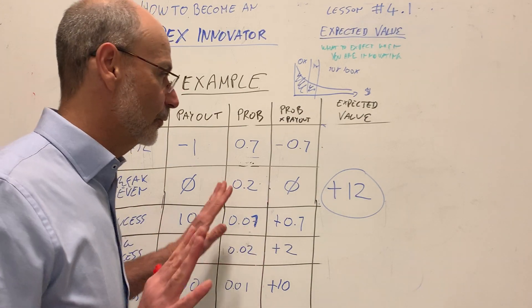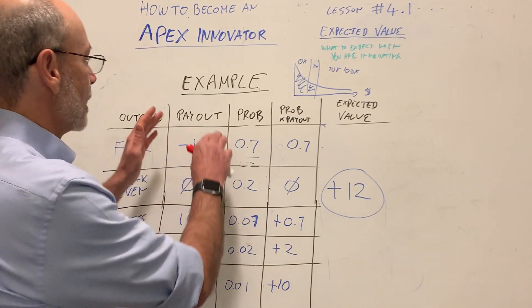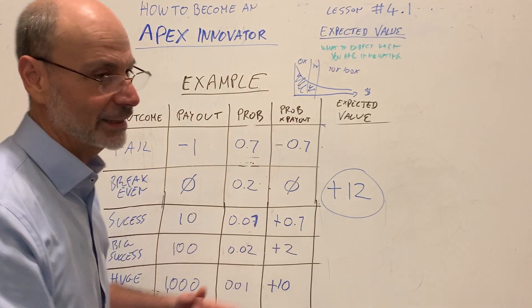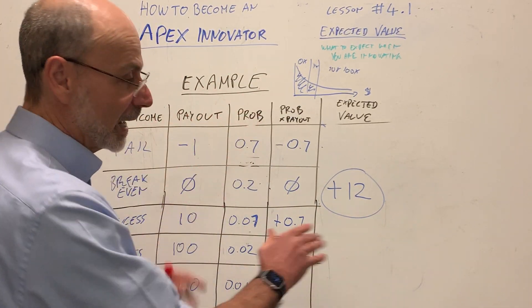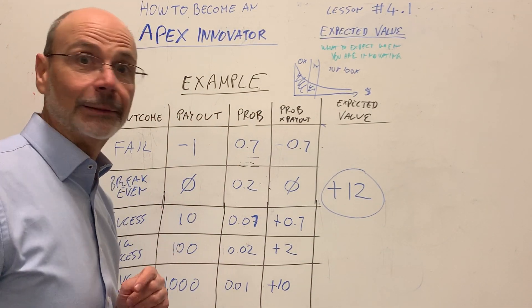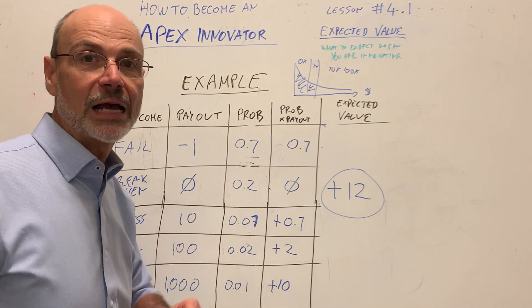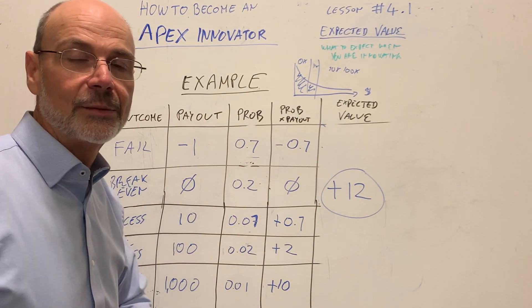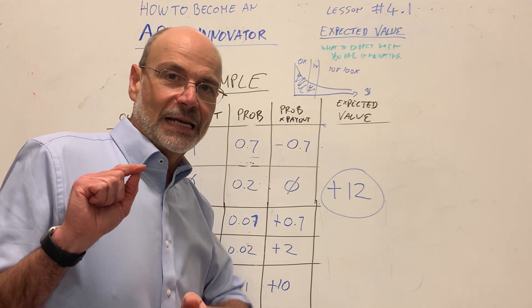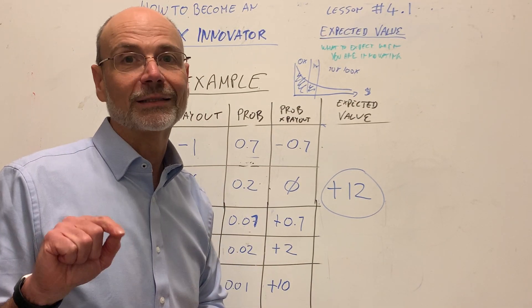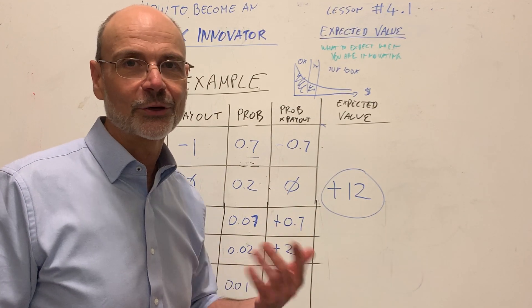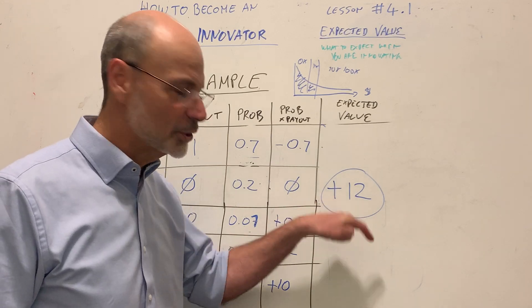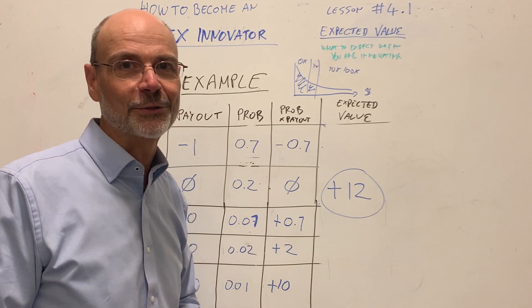If you understand how this is played, you can achieve the same level of success. So now you understand expected value — just remember: it's the payout multiplied by the probability, summed across all outcomes. In the next video we'll discuss why innovation has to be experimentation to make this whole thing work. In the meantime, remember: it's better to get mathy than to get lucky, because over time you cannot count on luck. I hope to see you back for Lesson 4.2 — please subscribe, share with your friends, and I'll continue making these videos.